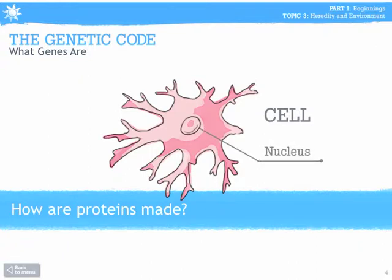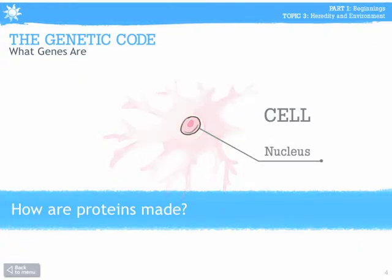By around day 12 of pregnancy, the ball of cells has embedded itself in the mother's uterine wall, and the cells obtain nutrients from her bloodstream. DNA instructs each cell to grow by building proteins of amino acids. The proteins will function as the bricks and mortar and as the chemical messengers of the body.